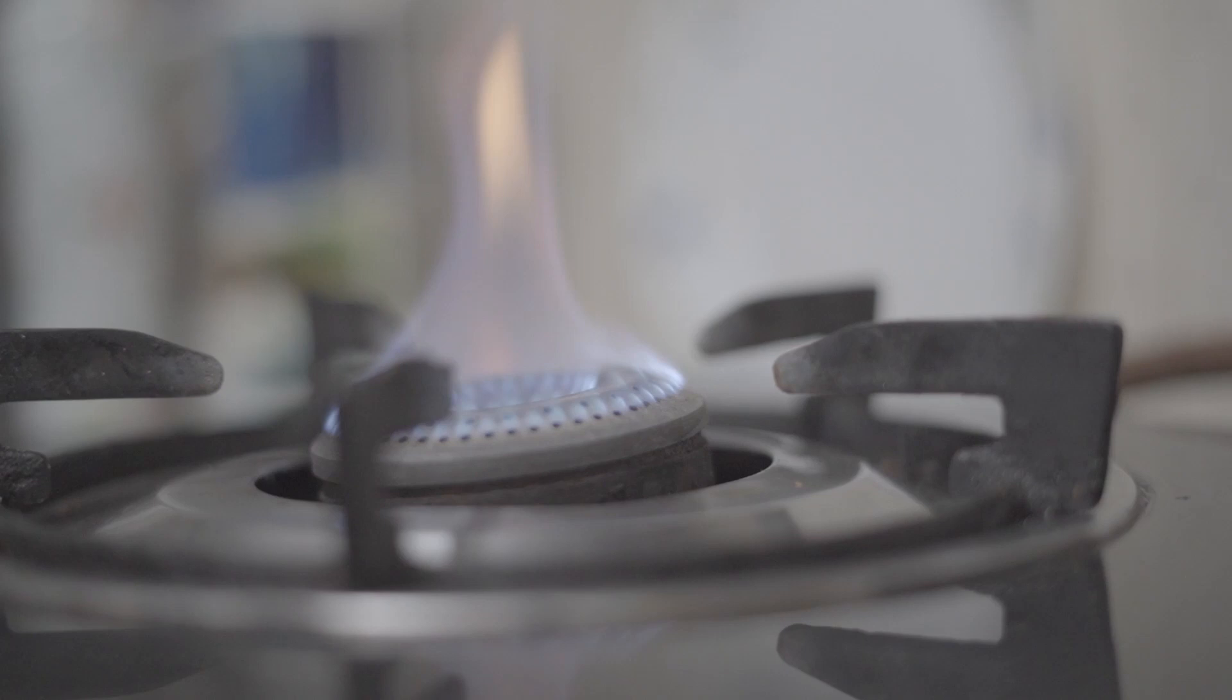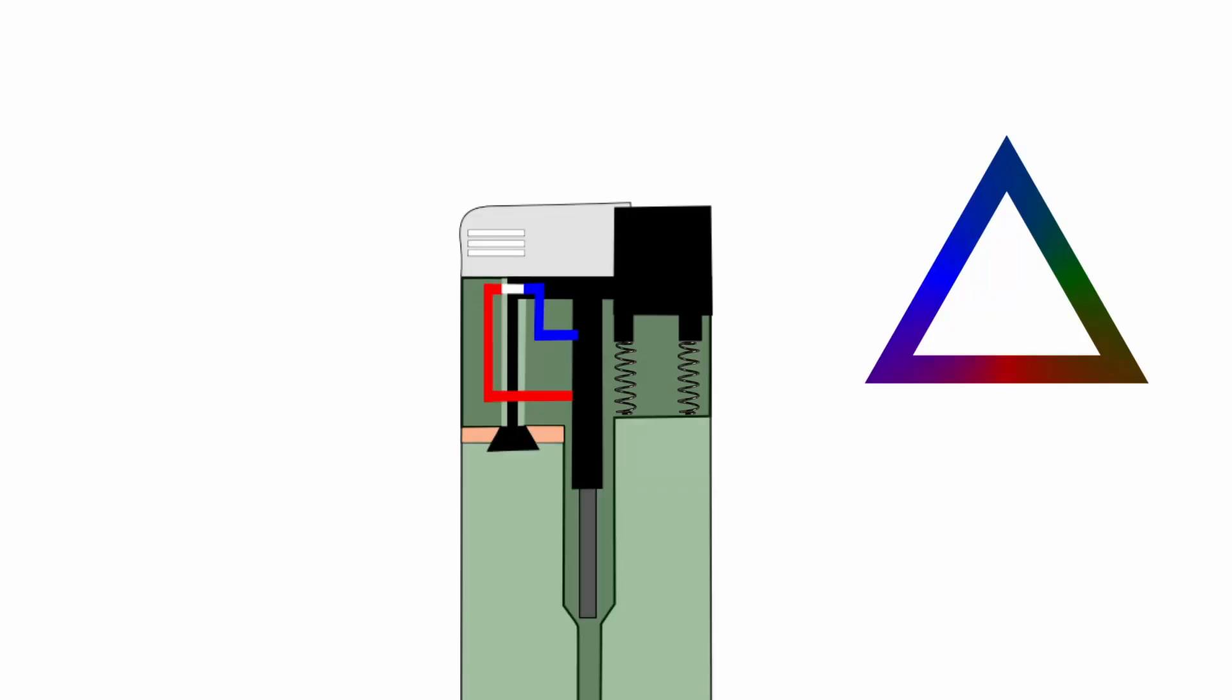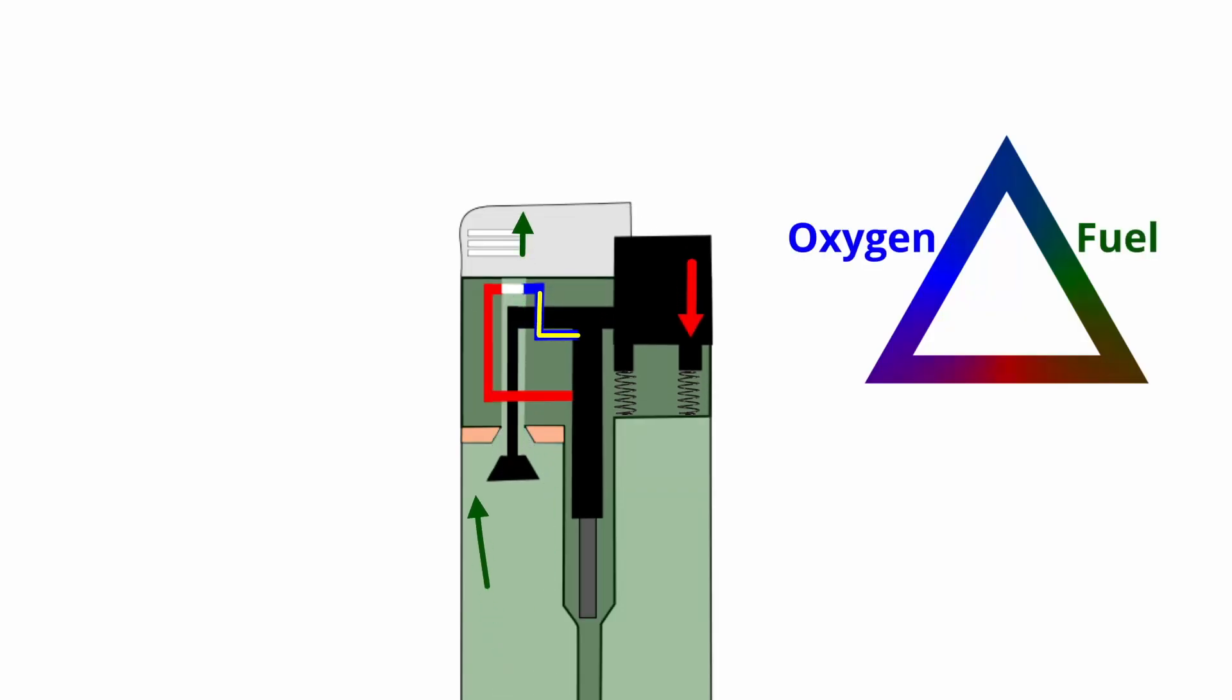This form of generating sparks is also used in most gas stoves to ignite the fuel. Pushing the button to generate the spark also opens the valve to release the butane fuel. So like before, all elements that are needed to start the fire are present.